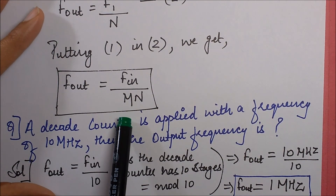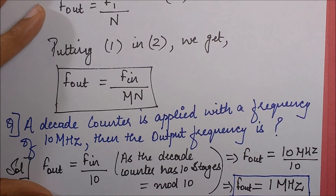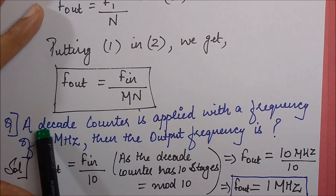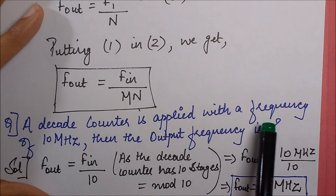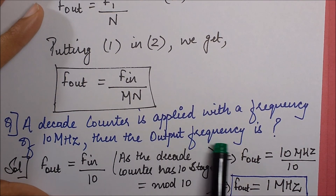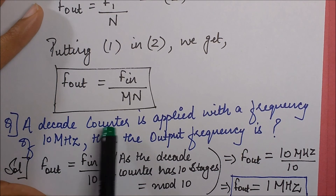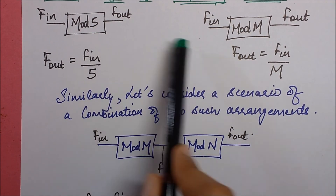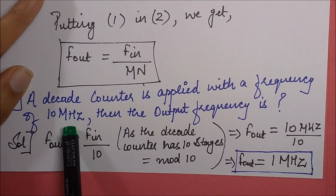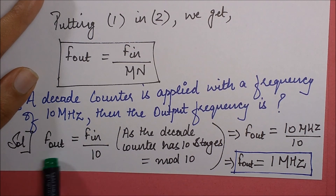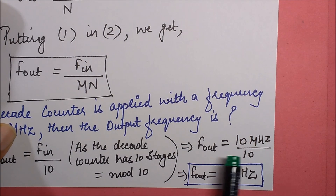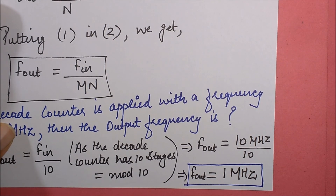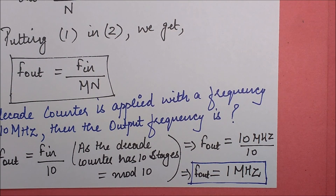Combining those two equations gives f_out equals f_in divided by m×n. For example, a decade counter has 10 stages, so m equals 10. If the input frequency is 10 megahertz, then f_out equals 10 divided by 10, which is 1 megahertz. That covers these types of numericals. In the next session we'll dig deeper into counters, starting with the ripple counter.